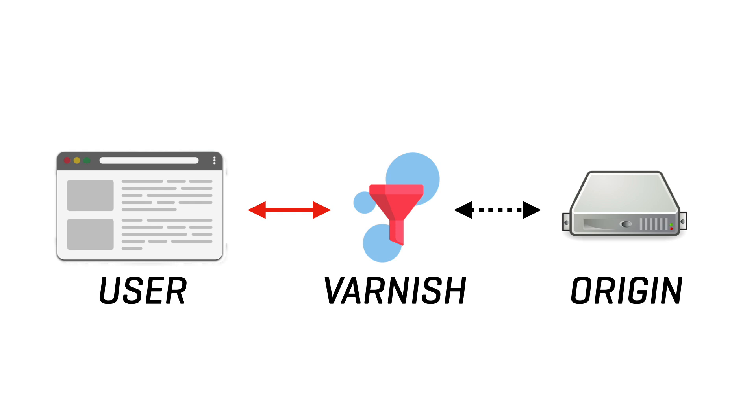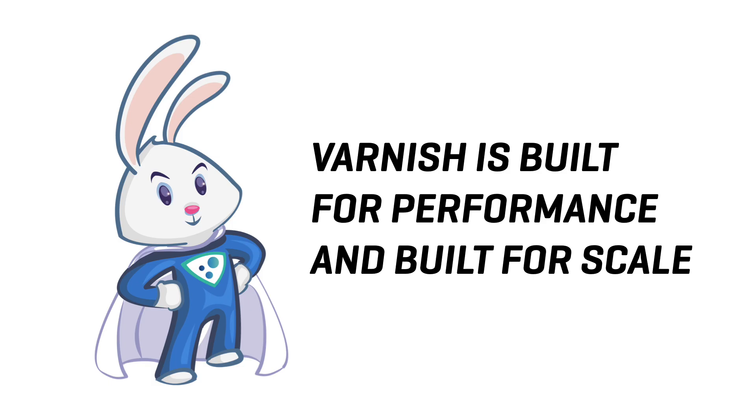The question remains: what prevents Varnish from becoming a bottleneck itself? Won't it succumb to the same type of pressure that the origin servers are struggling with? The answer is no. Varnish is built for performance and built for scale, and its architecture is focused around using as little server resources as possible and having as few operational and functional responsibilities as possible. This ensures that Varnish can handle a lot more requests than your typical web or application server.